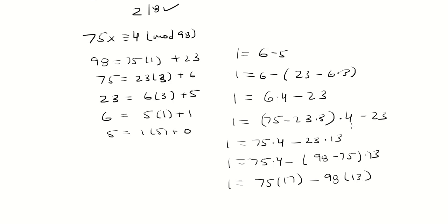So what this says is that 17 is the multiplicative inverse of 75. So that means if I take 75, multiply it by 17, that's going to be congruent to 1 mod 98.